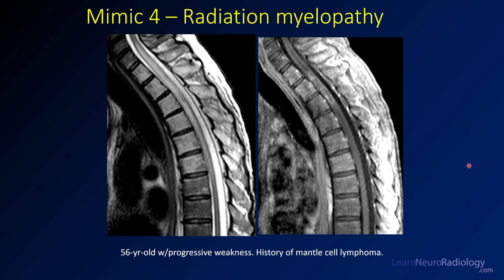Mimic number four is radiation myelopathy. This was a 56-year-old with progressive weakness and a history of mantle cell lymphoma. In the upper thoracic spine, there's a long-segment T2 abnormality from about C6-C7 through the mid-thoracic spine to roughly T6. On post-contrast imaging, it looks like many of the tumors from the previous lecture — broken enhancement, maybe some central necrosis — but unlike those tumors, there's not a lot of expansion or mass effect.